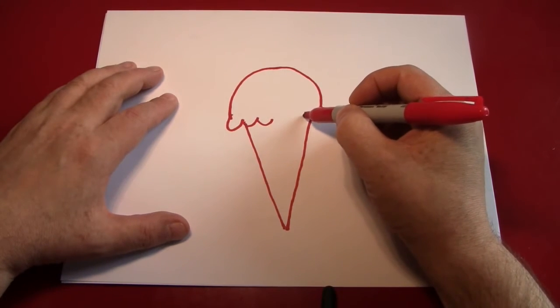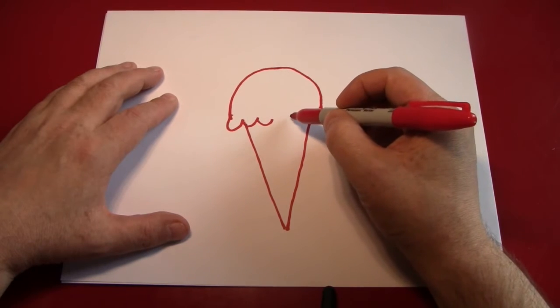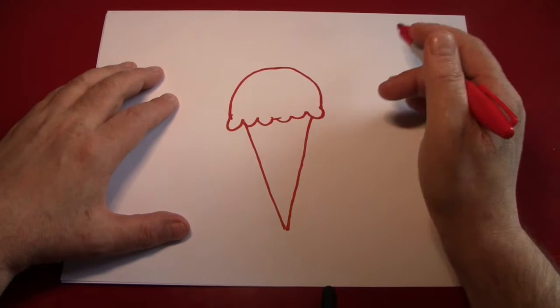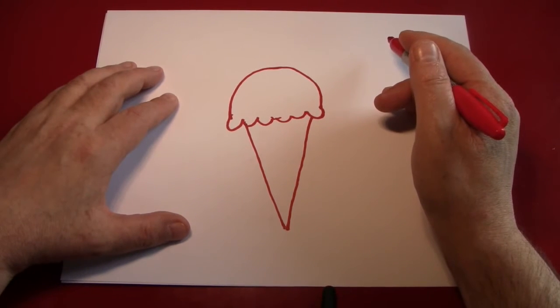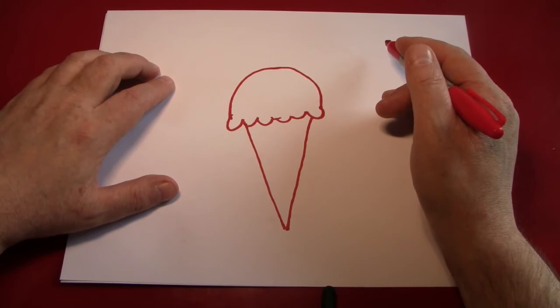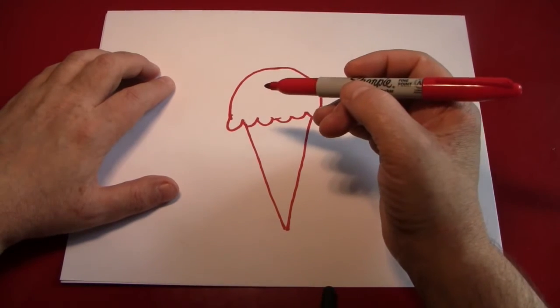And this gives the impression of ice cream coming out over the cone, and it's a very generous serving. And what flavor is the ice cream? Well, you can decide by the color of your magic marker.